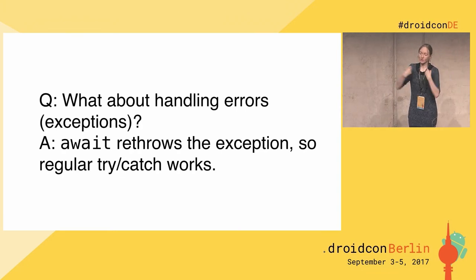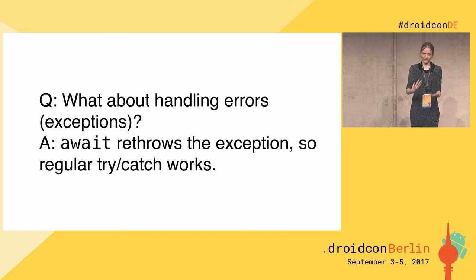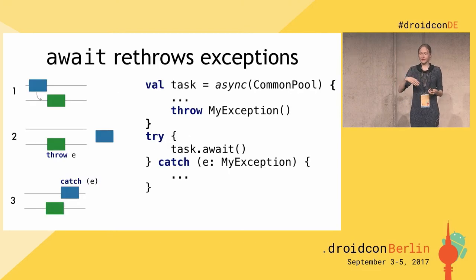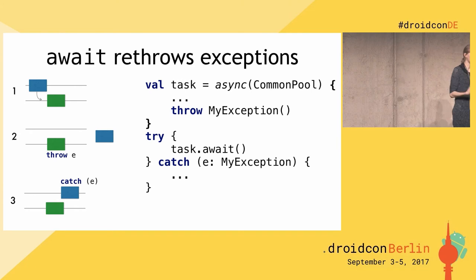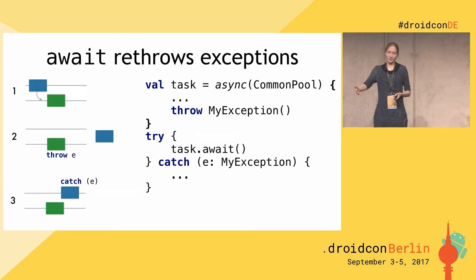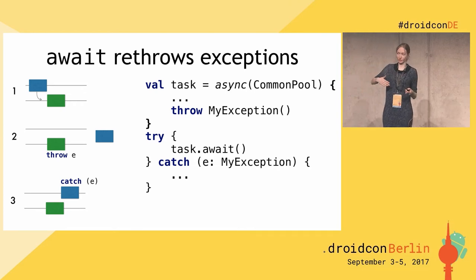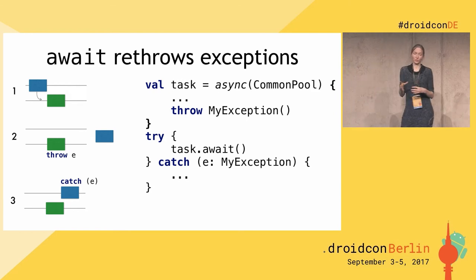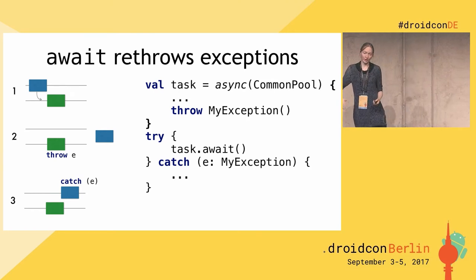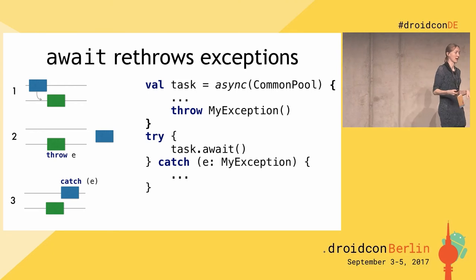How do we handle exceptions? `await` just re-throws the exception, so regular try-catch works. You can throw an exception in one coroutine and catch it in another — handling it in another thread. In this example, we throw in the green coroutine and catch it in the outer coroutine that was suspended. So you just write regular code like you write with threads, without using callbacks and other advanced ways of handling exceptions.